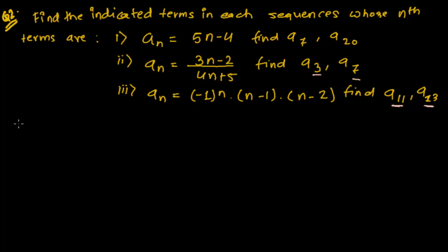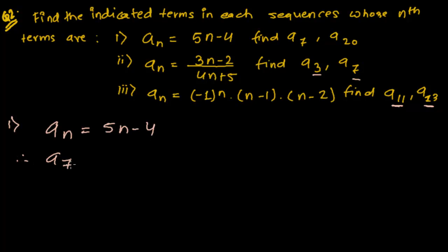So let me do them one by one. The first one: given that an = 5n-4. What I have to find out — I have to find out a7. So simply, I will replace n by 7.